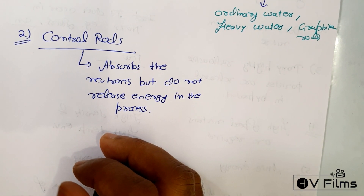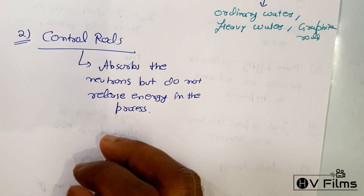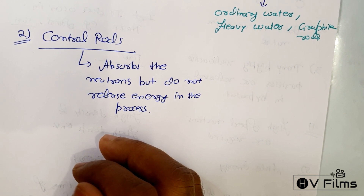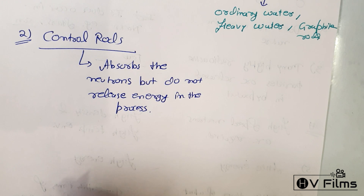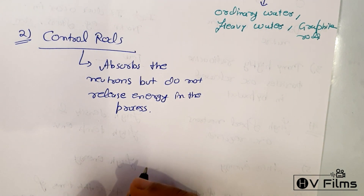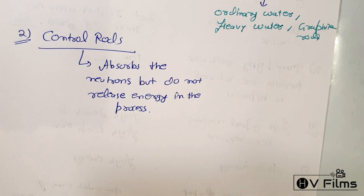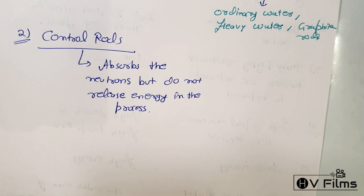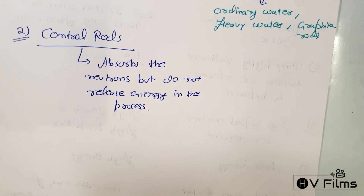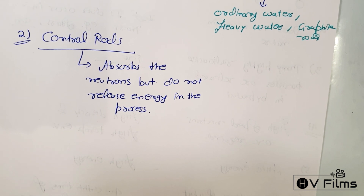Plutonium-239 is sometimes manufactured using uranium-238 by hitting it with neutrons released in the reactor. These are the basic differences between the moderator and the control rods.